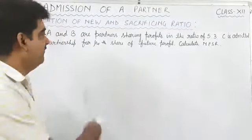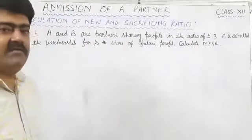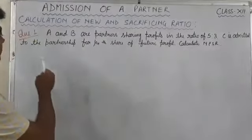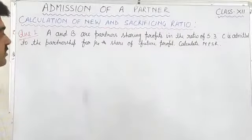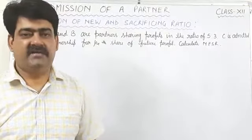I have taken one question. A and B are partners sharing profits in the ratio of 5:3. C is admitted to the partnership for 1/4 share of future profit and we have to calculate new profit sharing ratio.